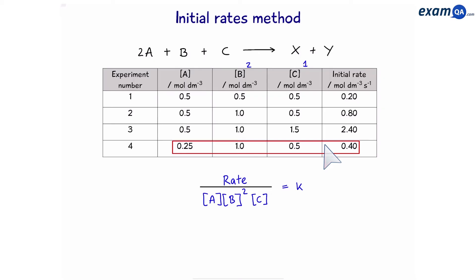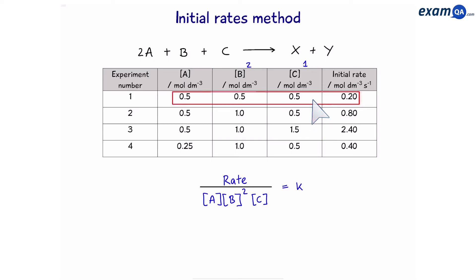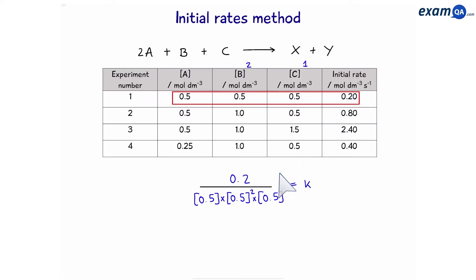To make it easier, we'll just use the first row. We're going to put 0.5 for A, B, and C, and 0.2 for the rate. That gives us the following equation, and this equals 3.2.